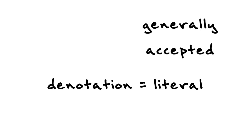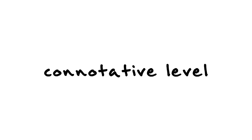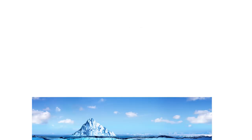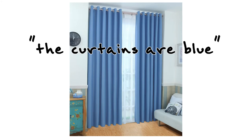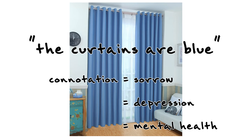Hall defined the connotative level as the point where a sign stops being surface level and starts getting ideological. The classic example in literary analysis: when an author writes 'the curtains are blue,' at the denotative level that simply means the curtains are blue. But digging into the connotations, perhaps it means the character in the room is always sad, and you can connect this to structures of mental health and depression. At that stage — the connotative stage — it becomes ideological, something impossible at the purely denotative level.